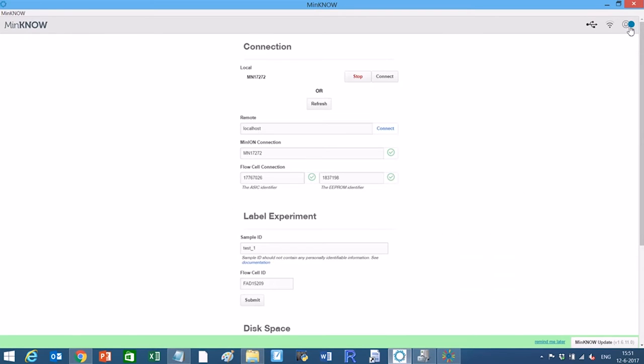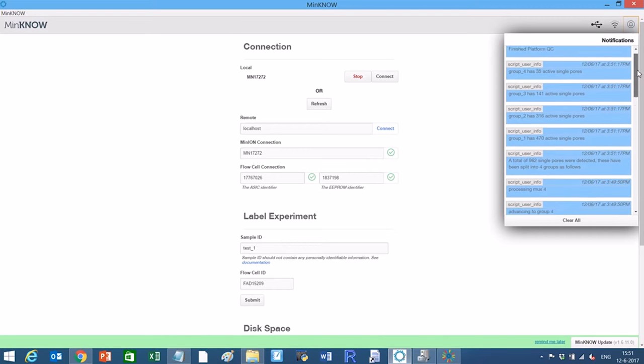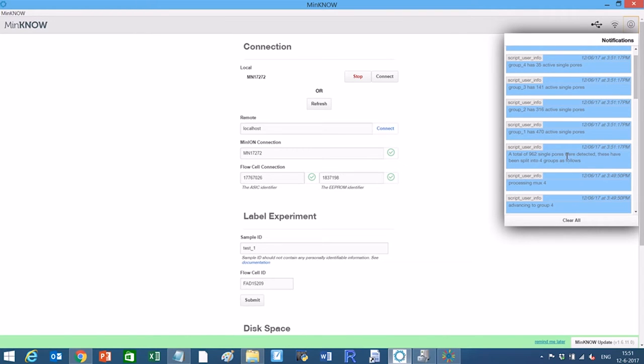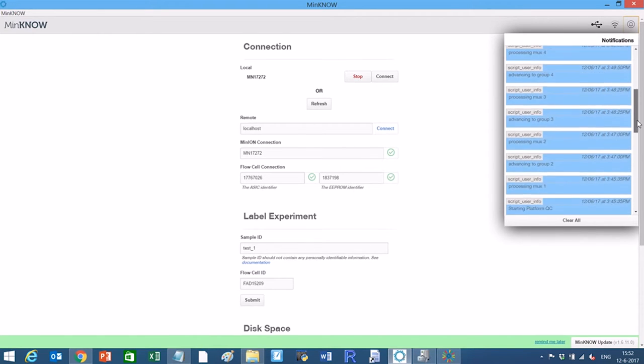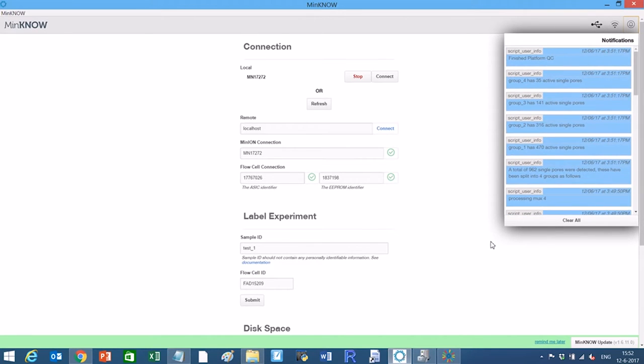Active ports are reported in four groups, each of which may be used in turn when running long experiments, example, a 48-hour sequencing run. Shorter experiments will use fewer than four groups.